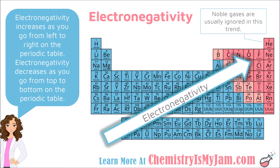The reasons behind this trend are very similar to those for ionization energy. As you go from left to right, you are adding protons to the nucleus, and those protons are able to pull electrons closer to themselves. As you go from top to bottom, energy levels are added, so electrons get farther from the nucleus — increasing the distance and decreasing the pull on shared electrons. So electronegativity increases from left to right and from bottom to top.